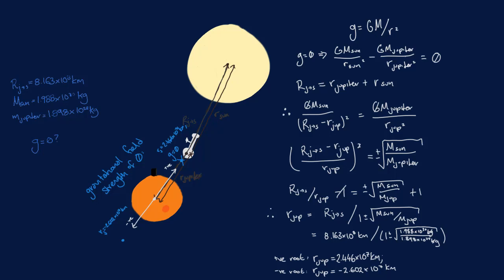Since we're only interested in the solution where the fields point in opposite directions and where the spaceship is travelling between the Sun and Jupiter, then we know that we need to select our first answer, where our distance from Jupiter is equal to 2.446 times 10 to the 7 kilometers.